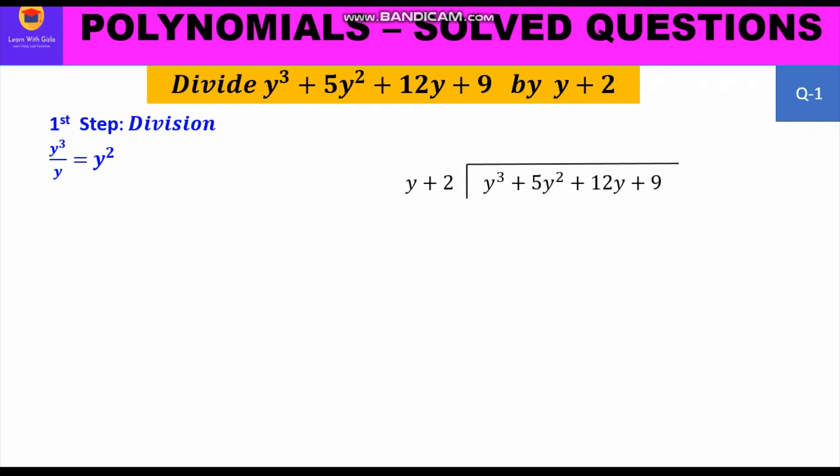We start with the first step — division. We take the first term of the dividend and divide it by the first term of the divisor: y³ ÷ y = y². That is our first quotient term, written on top. Another way to find y² is to ask: what must be multiplied by y to get y³?